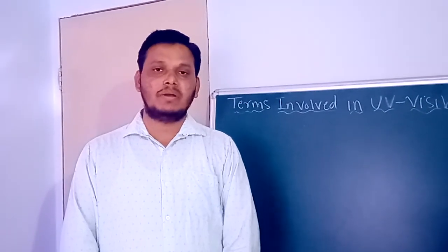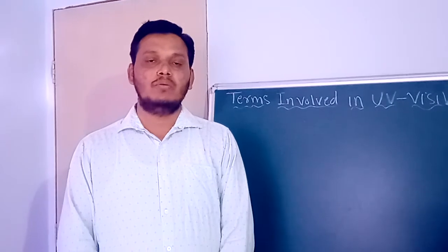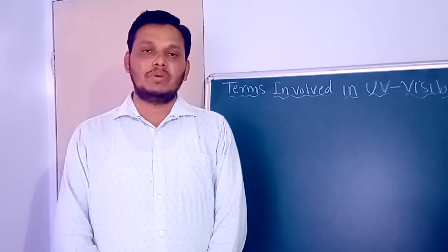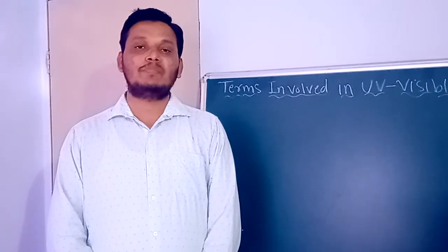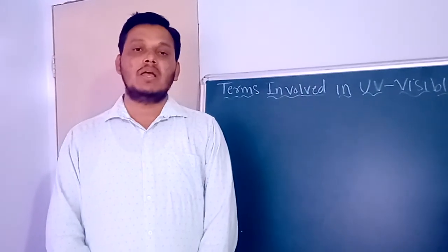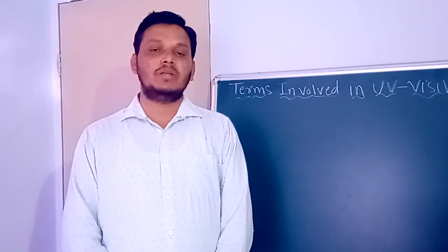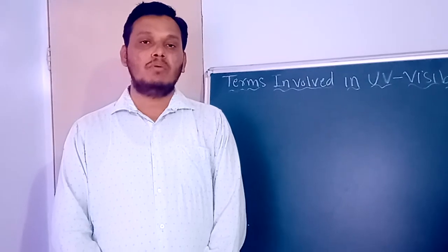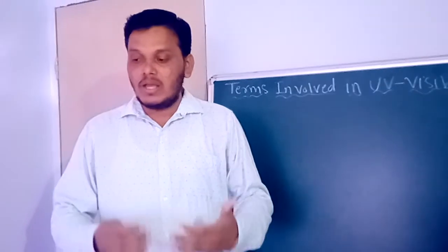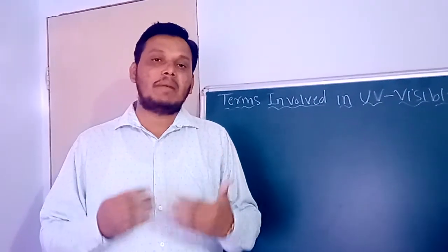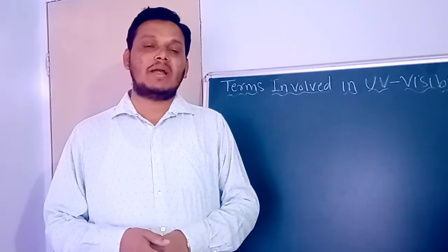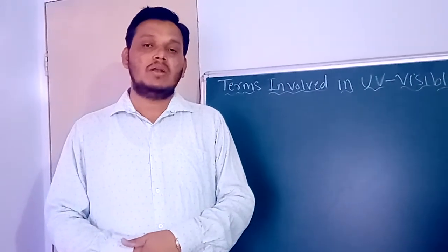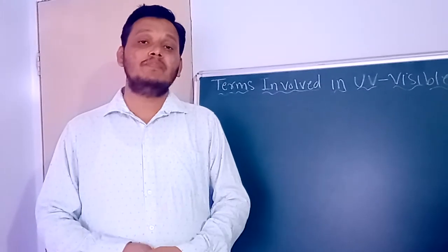Good morning all of you. Welcome back again. In today's session, we will see the different terms used in UV visible spectroscopy. UV visible spectroscopy is one of the oldest physical methods, useful for qualitative and quantitative analysis. It is mainly concerned with the ultraviolet region from 200 to 400 nanometers and the visible region from 400 to 800 nanometers. Spectroscopy is the branch of science that deals with the study of electromagnetic radiation with matter or substances.